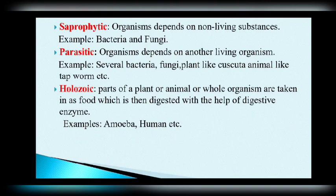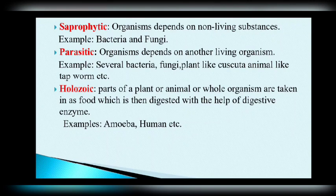The last type is holozoic nutrition. In this type, part of a plant or animal, or a whole organism, is taken in as food, which is then digested with the help of digestive enzymes. Examples are amoeba, humans, and all higher animals. The organism takes in complex food and, with the help of enzymes, this complex food is converted into simple food. This type of nutrition is known as holozoic nutrition.